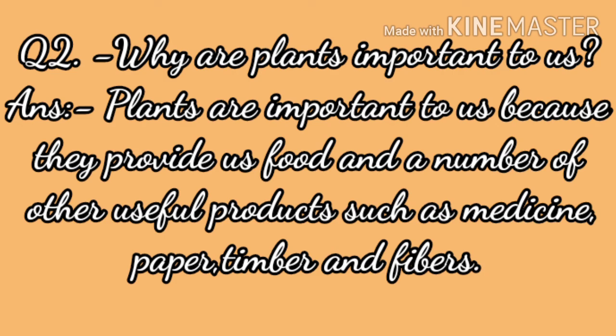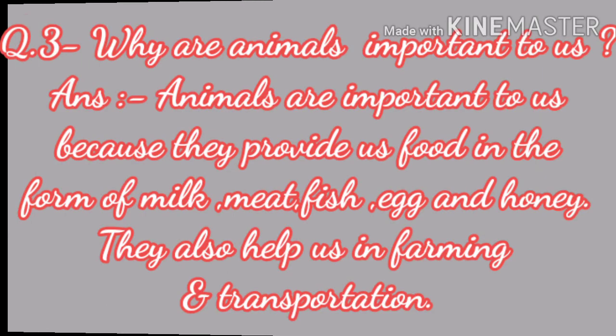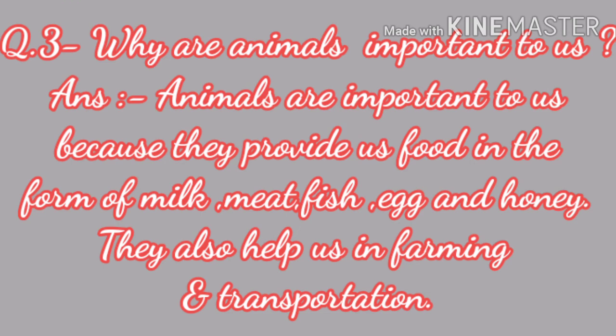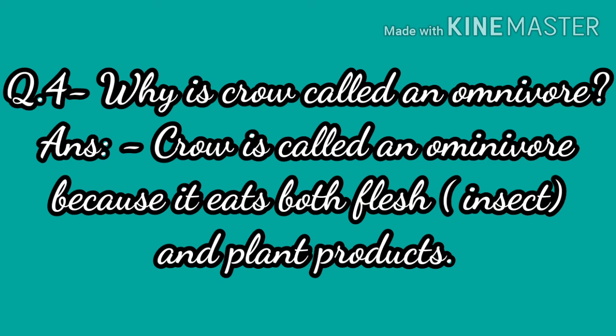Question number 3: Why are animals important to us? Animals are important to us because they provide us food in the form of milk, meat, fish, egg and honey. They also help us in farming and transportation. Question number 4: Why is the crow called an omnivore? Answer: The crow is called an omnivore because it eats both flesh, insects and plant products.